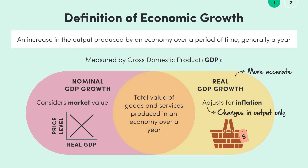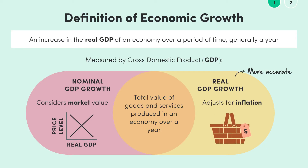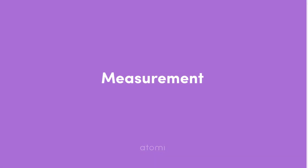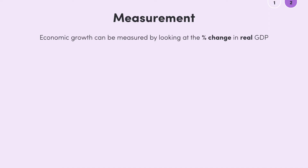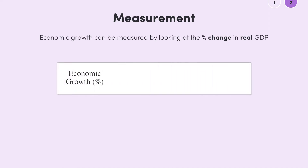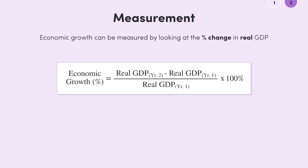So, if we want to be a bit more specific, economic growth can be defined as an increase in the real GDP of an economy over a year. It follows that we can measure economic growth by looking at the percentage change in real GDP. Economic growth is calculated using this formula: Real GDP in year 2 minus GDP in year 1, divided by real GDP in year 1, times 100. We find the difference between real GDP in years 1 and 2, divide by GDP in year 1, then multiply by 100 to get the GDP increase as a percentage.